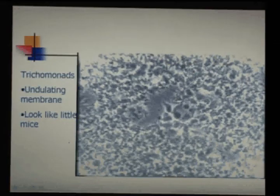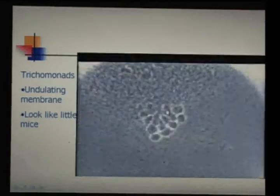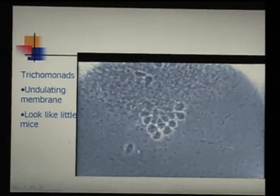These are trichomonads. They have an undulating membrane and look like little mice in the field.